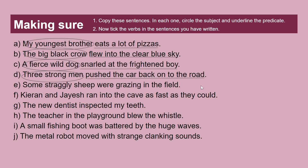Sentence E: 'Some straggly sheep were grazing in the field.' The subject is 'some straggly sheep' and the predicate is 'were grazing in the field.' Sentence F: 'Kiran and Jayesh ran into the cave as fast as they could.' The subjects are 'Kiran and Jayesh.' Sentence G: 'The new dentist inspected my teeth.' The subject is 'the new dentist' and the predicate is 'inspected my teeth.'